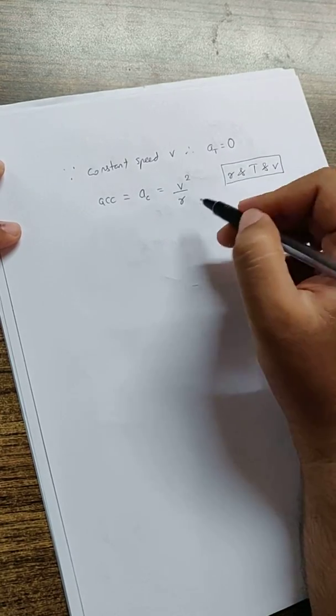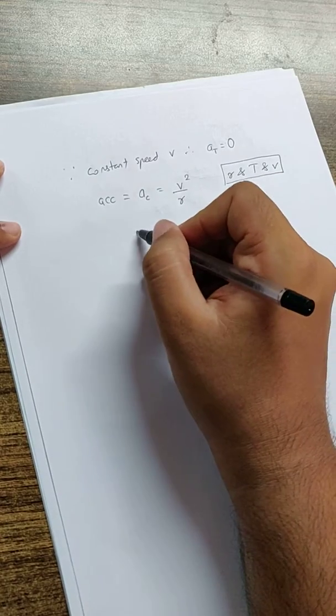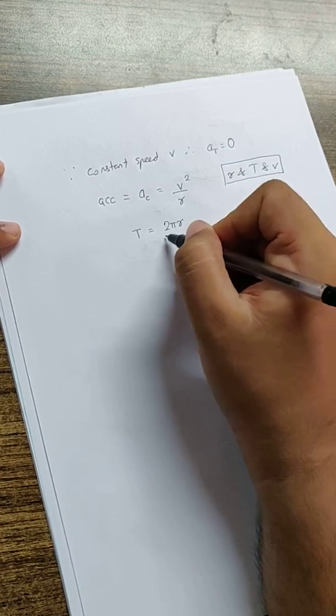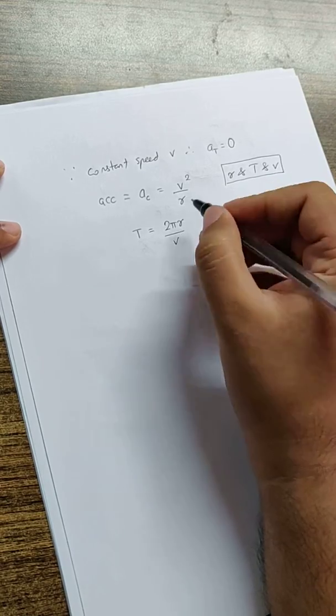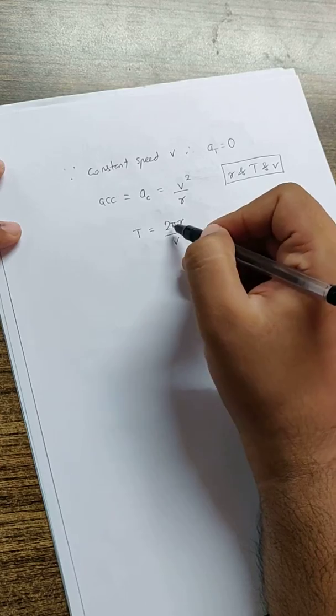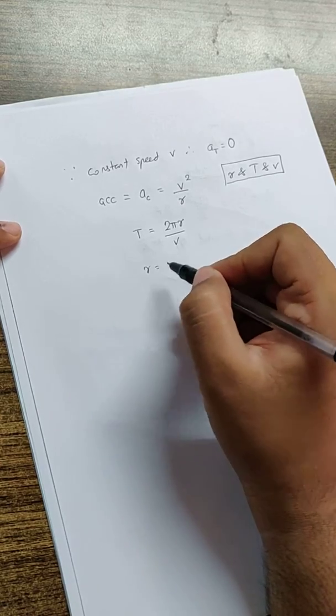We know time period is the total circumference upon the velocity, so I can substitute R as VT by 2π if we want the answer in terms of V and time period. If I substitute that,